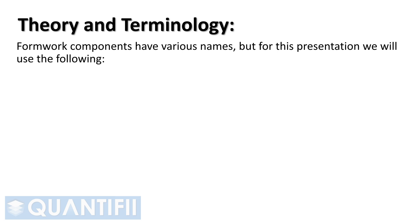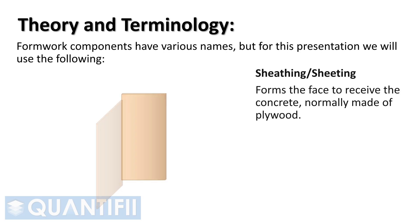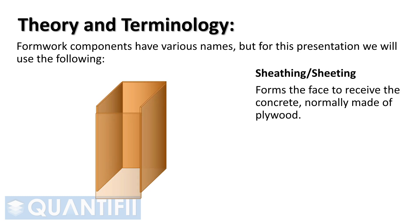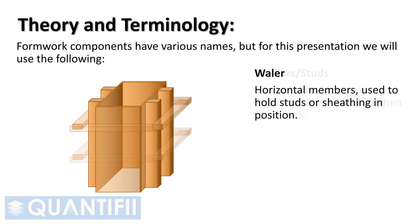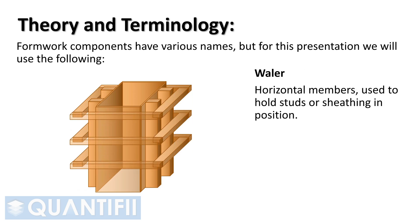Formwork components have various names, but for this presentation we will use the following. Sheathing, or sheeting — forms the face to receive the concrete, normally made of plywood. Soldiers, or studs — vertical members used to support, align, and strengthen formwork. Whalers — horizontal members used to hold studs or sheathing in position.